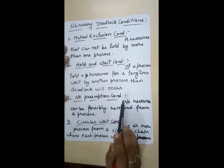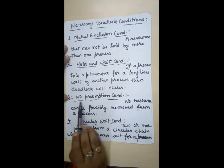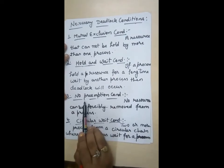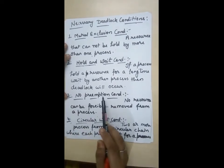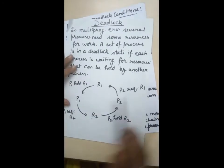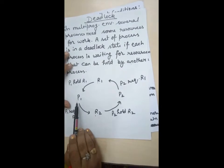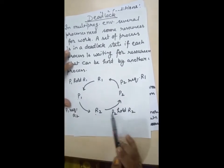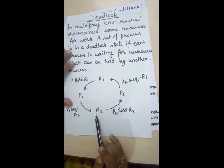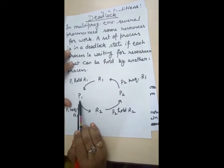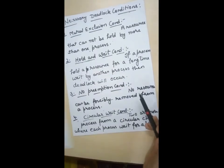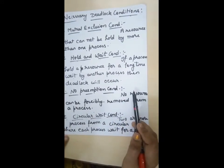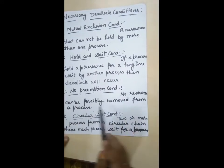The third condition is no preemption. No preemption means resources cannot be forcibly taken away. As shown in this diagram, until we forcibly take resource R2 from process P2, P1 will not get it. So this is the no preemption condition — and deadlock will occur.